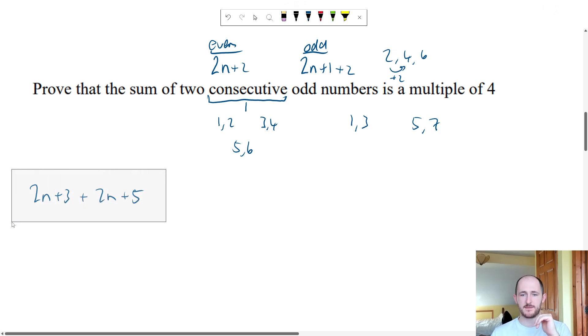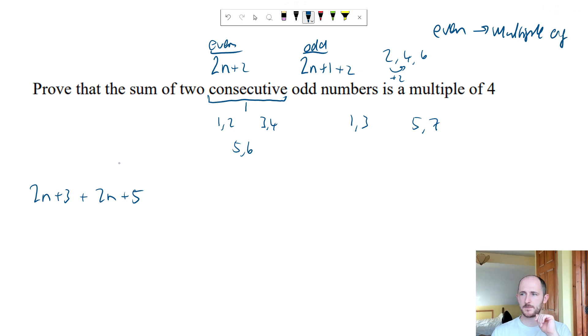So we're going to try and factorize a 4 out of this expression. By the way an even number is a multiple of 2 so if they ask you to show that an expression is always even you're just going to try and factorize out a 2. So collecting the like terms we get 4n plus 8 which I can write as 4 times n plus 2, so because we have this 4 factorized out it must be a multiple of 4.